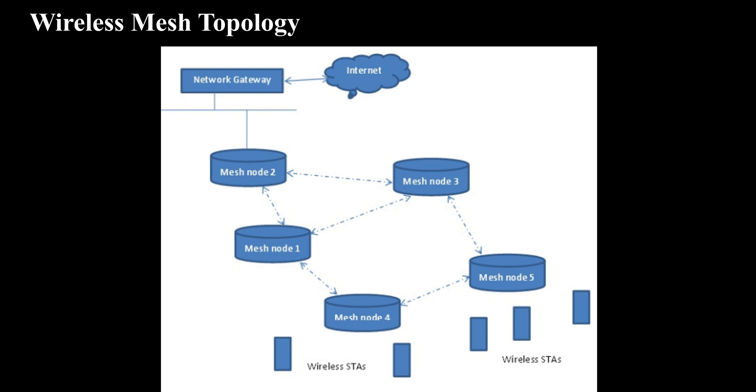Two more WLAN network topologies are Wireless Mesh Topology and P2P Network Topology. The wireless mesh network is an interconnection of connected nodes which form a self-healing network. If one node goes down, a new path is formed to keep the mesh network running.